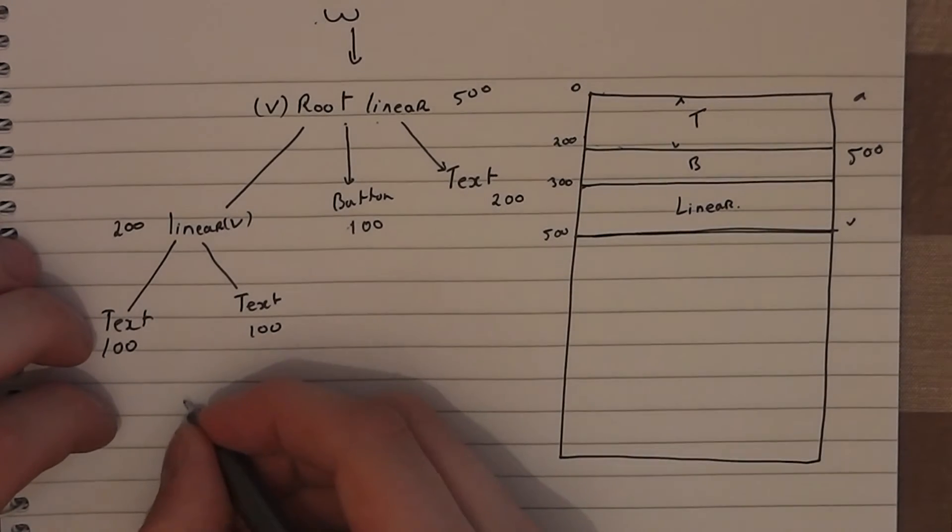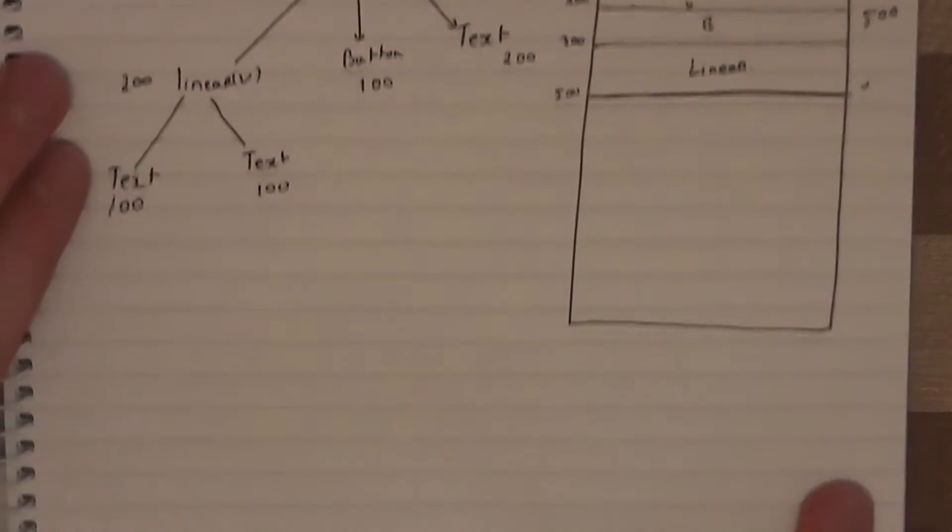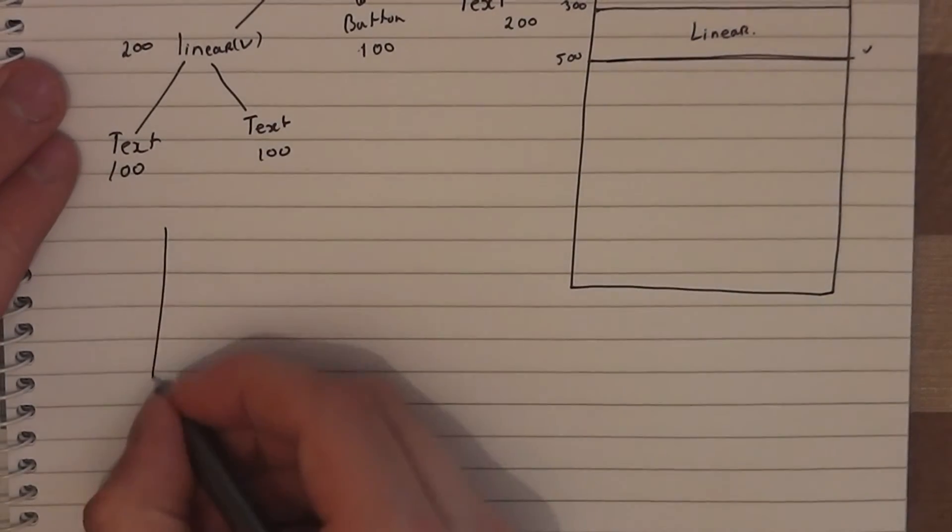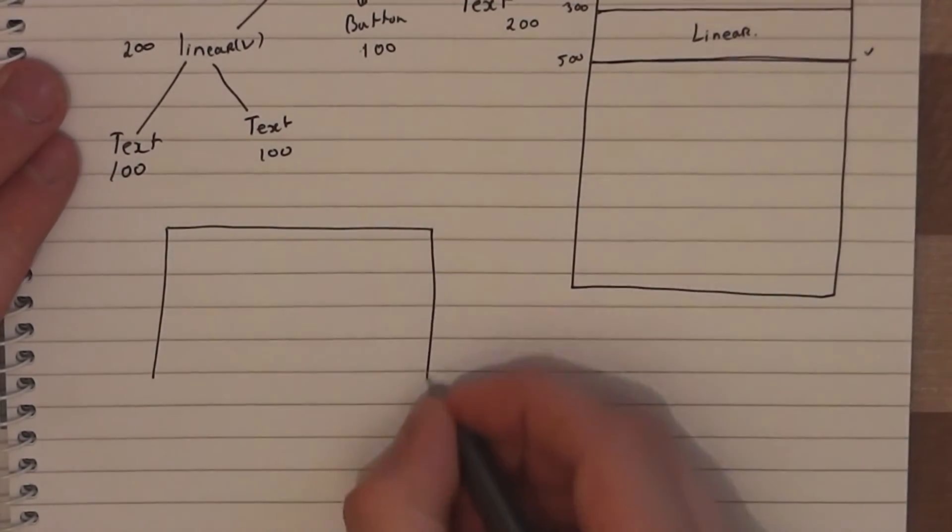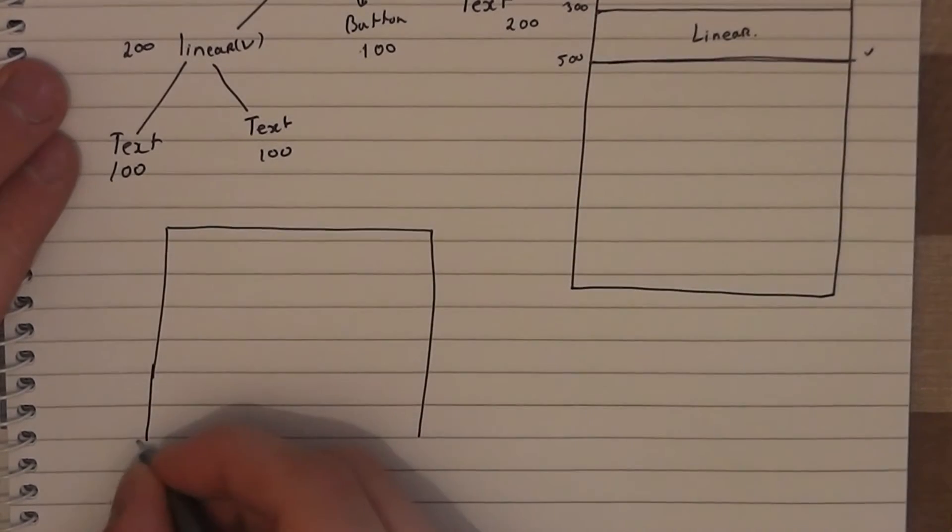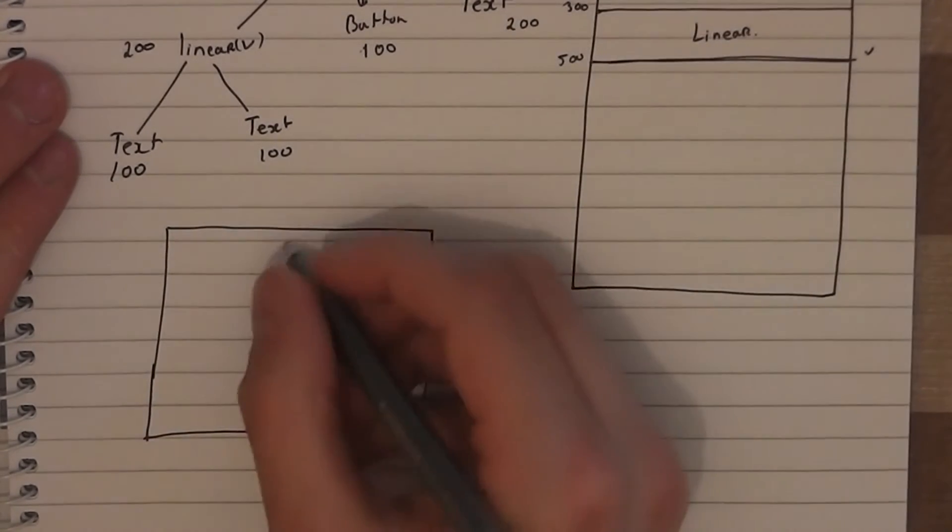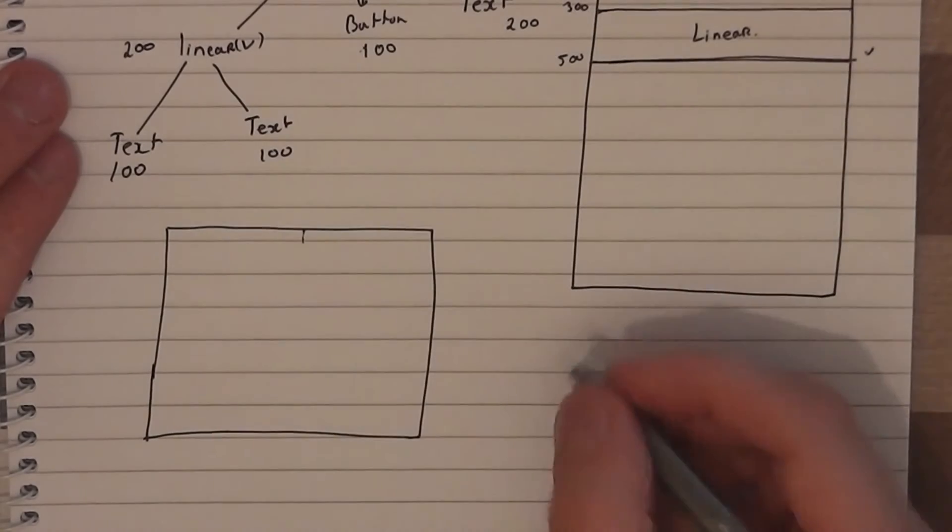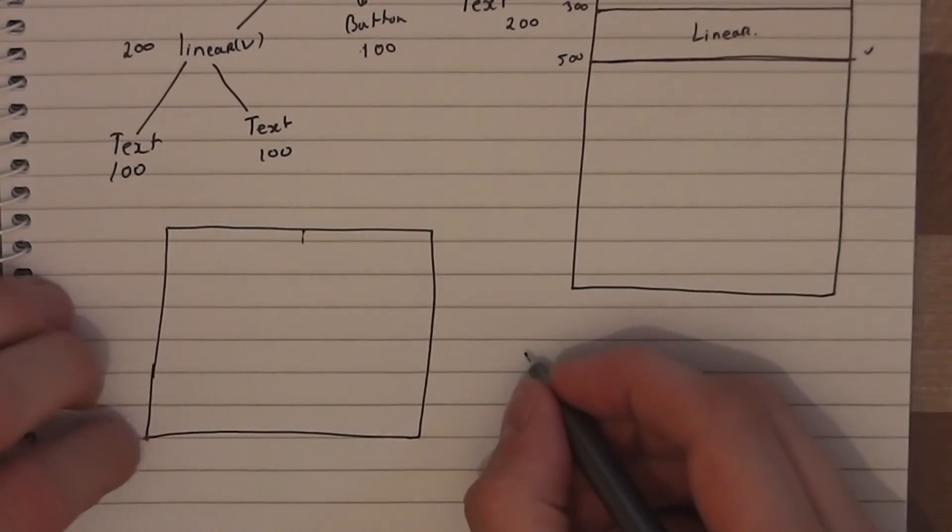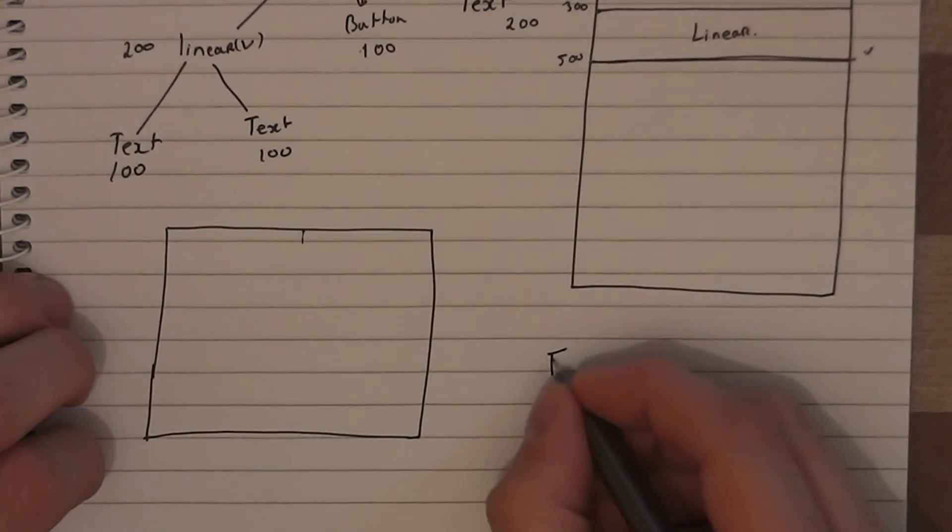The frame layout, if you just do a frame layout very quickly, I'll just draw it down here. I'll just push up the book a bit. The frame layout is a little bit different. The frame layout, we'll draw a very quick tree. So we've got frame, F for frame.